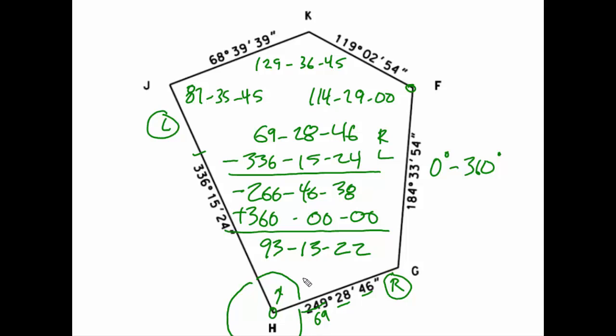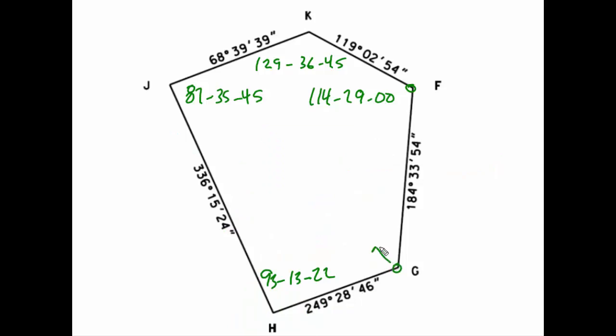As we stand at G and look toward the interior angle, F is on the right, H is on the left. The direction going from G to F should be in the northeast quadrant. Thus, it should be between 0 and 90. Here, it's 184, indicating that it is in the southwest quadrant. So to put it back in the northeast quadrant, we will subtract 180, and we get 4 degrees, 33 minutes, 54 seconds. The direction from G to H should be in the southwest quadrant, and indeed, the number 249, 28, 46 is consistent with that. So that azimuth can be left alone. Once again, we will subtract from the direction on the right, the direction on the left.